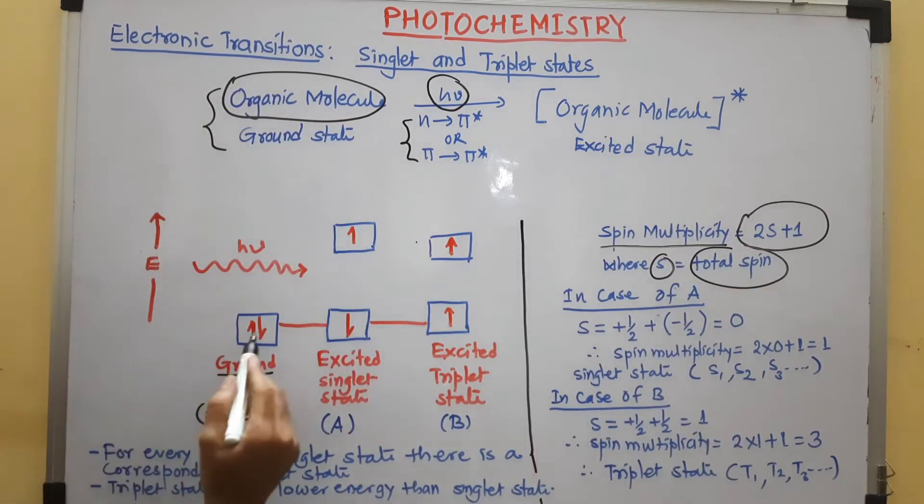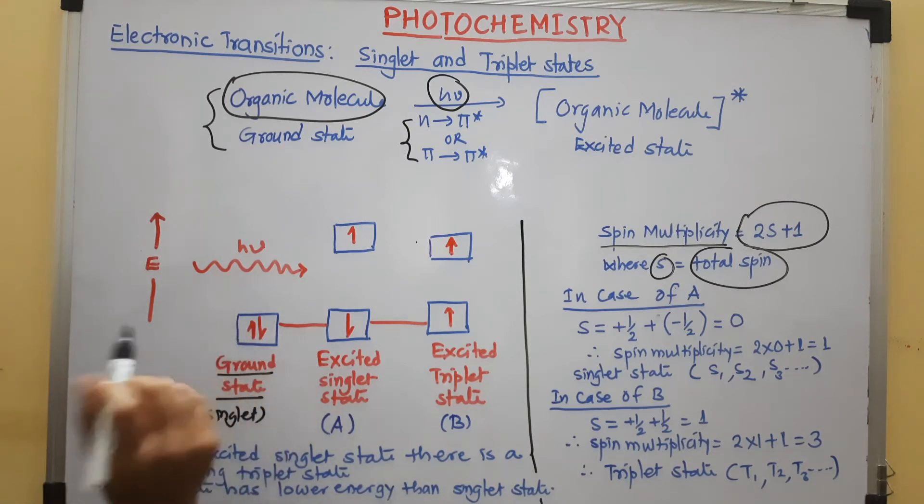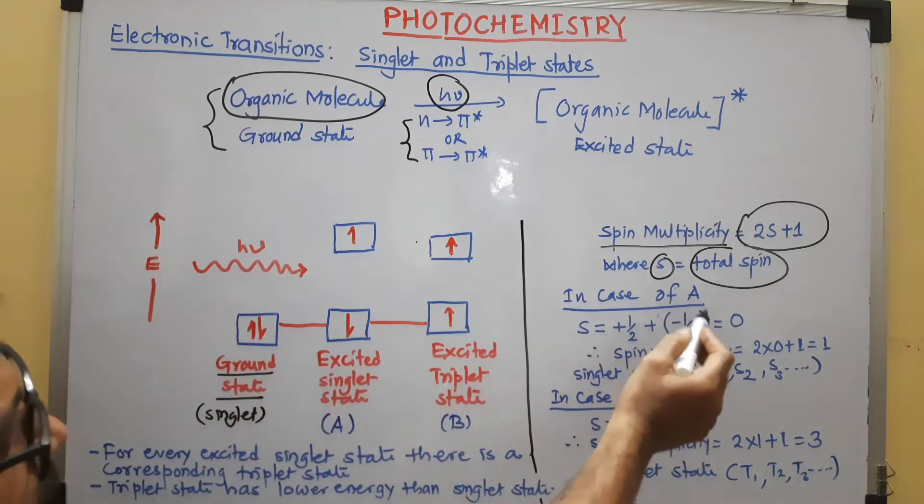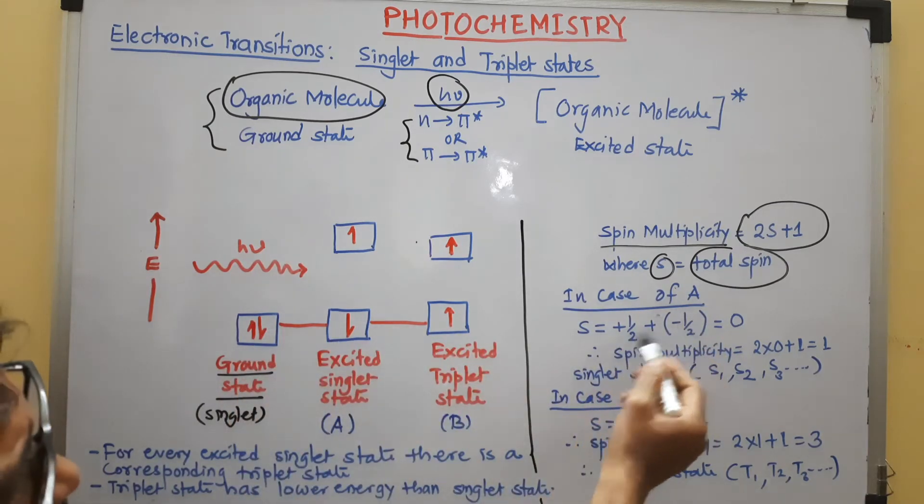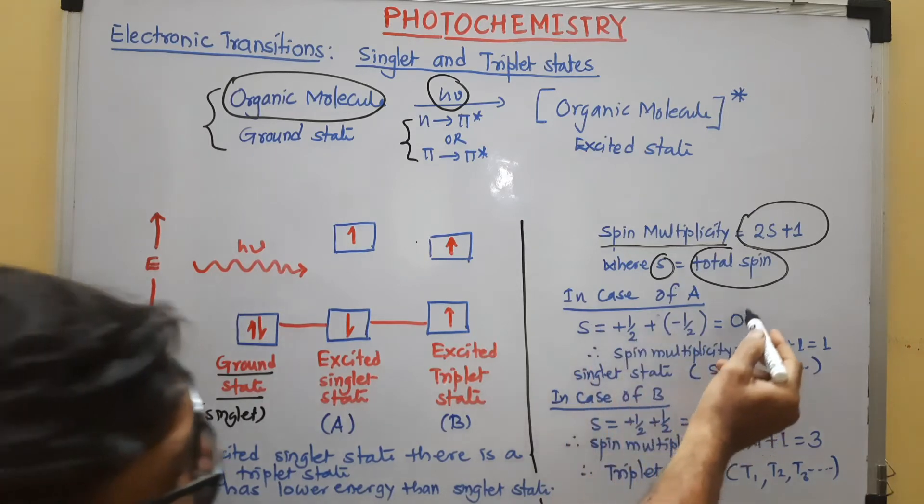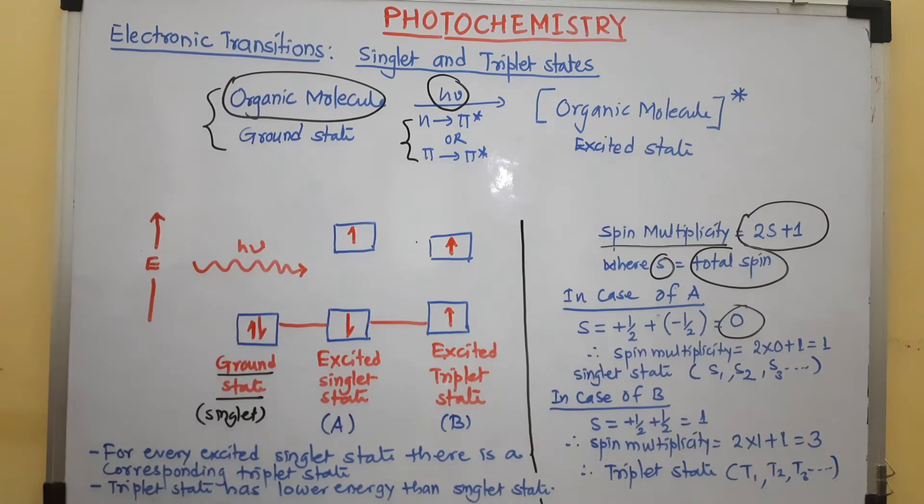In ground state, both electrons are paired. That means one electron having spin plus half and another electron is having spin minus half. When you add these two values together, the total spin becomes 0. So, if you put that value 0 here in this formula, you get a spin multiplicity 1.